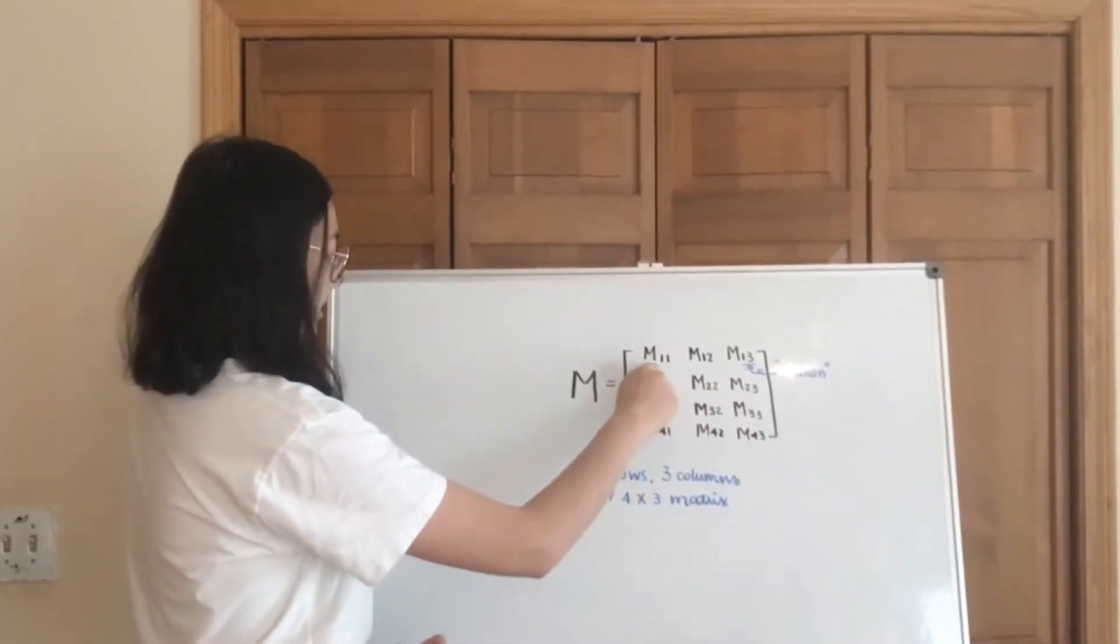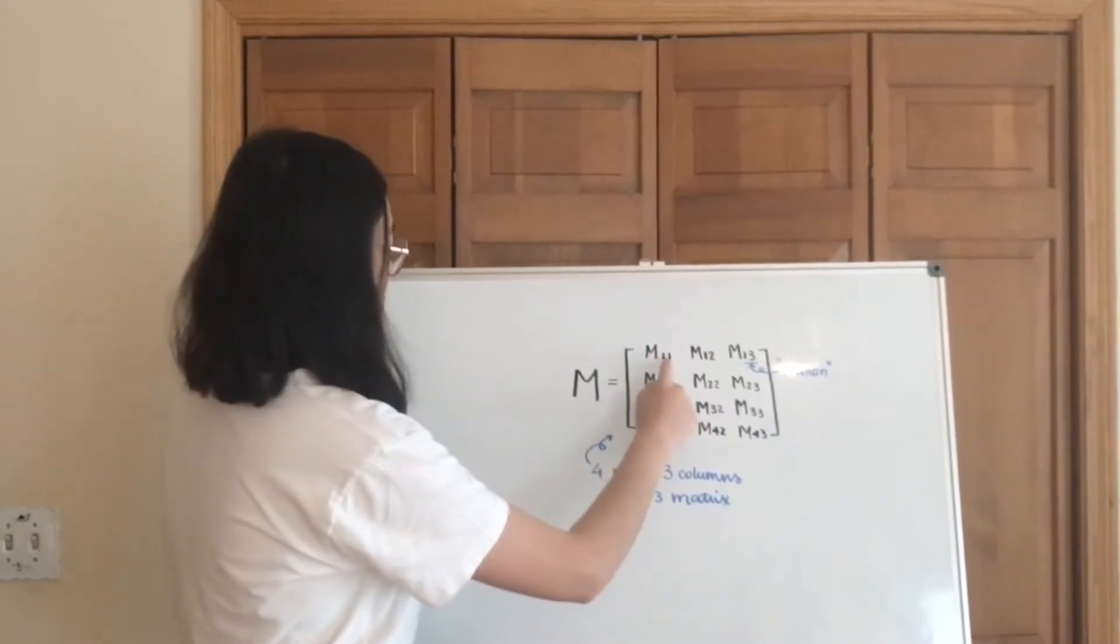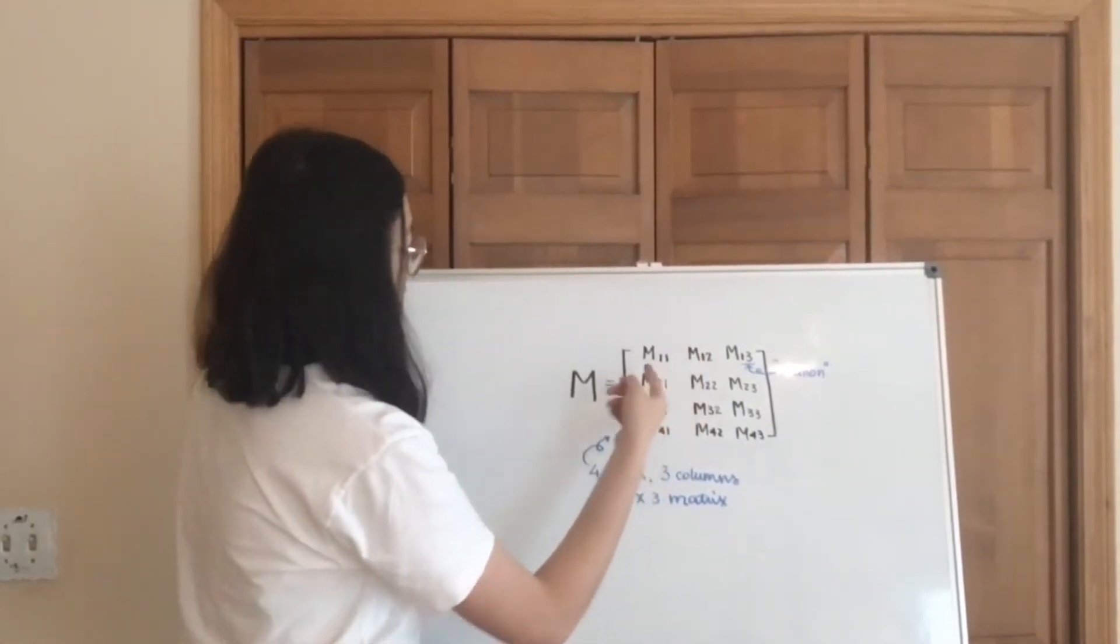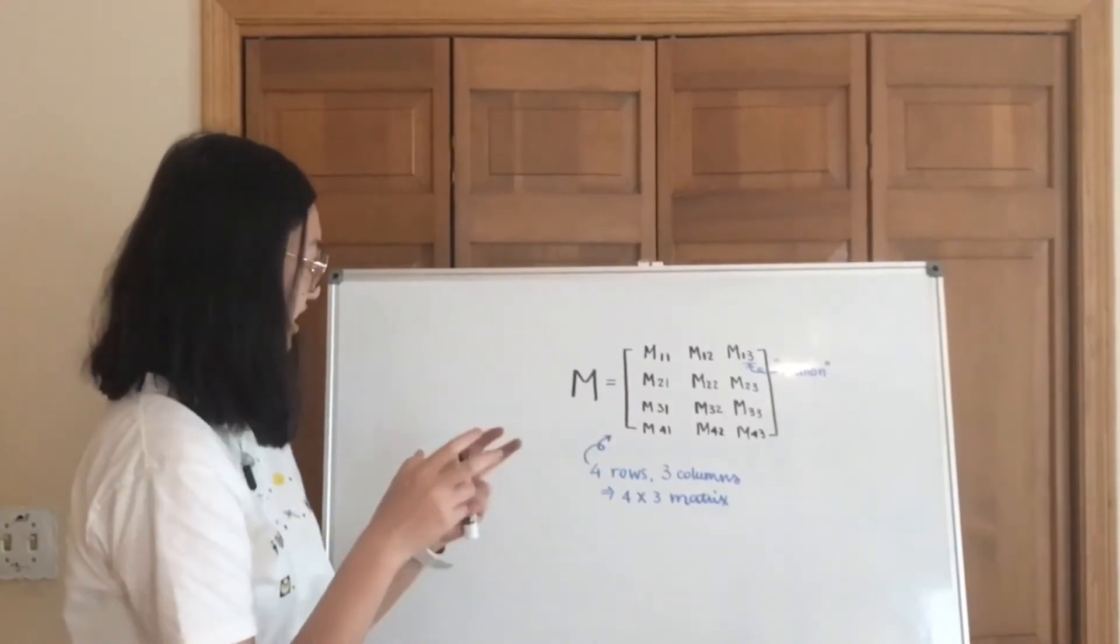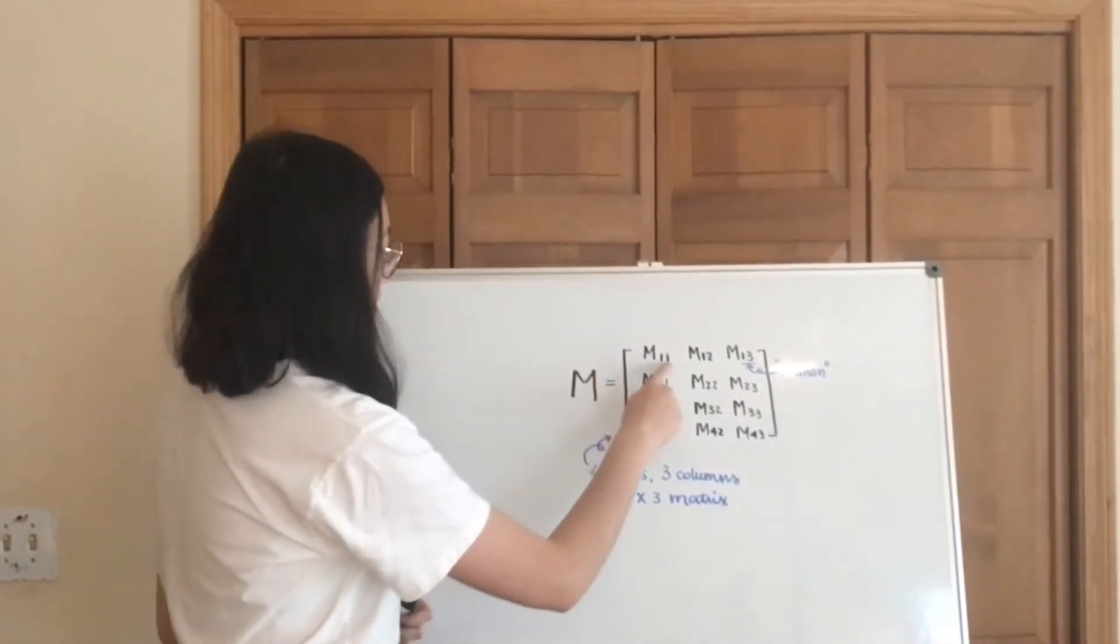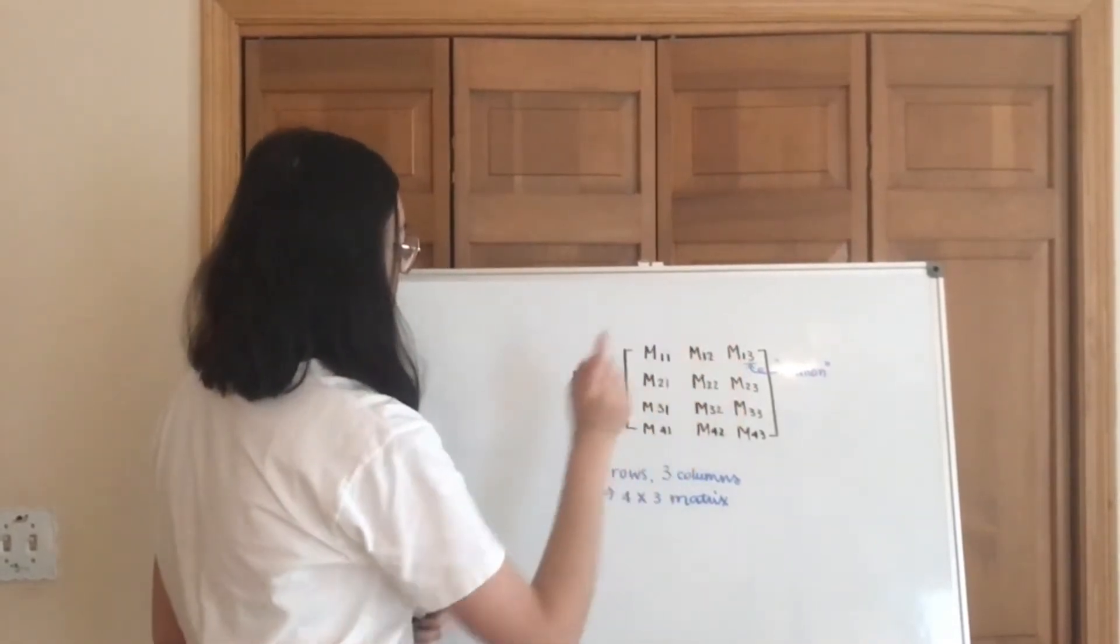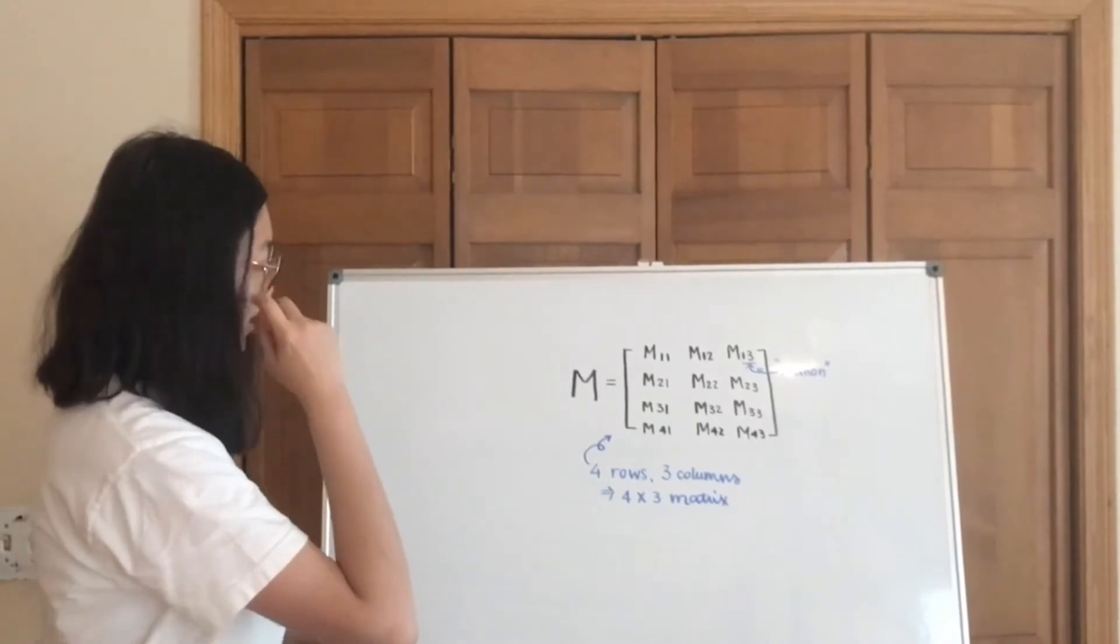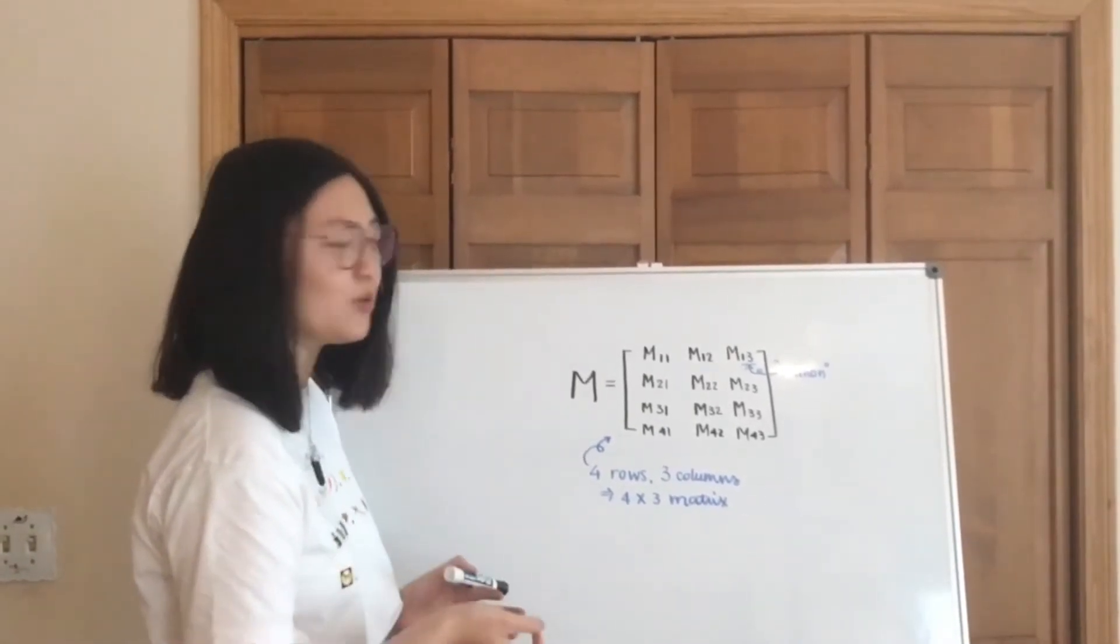represented by these capital letters with a little subscript. So this could be 1 or 4 or whatever, and it's basically kind of like a rectangle of numbers. So here, the little subscripts indicate the location of the number in the matrix, it's kind of like its own coordinate system.